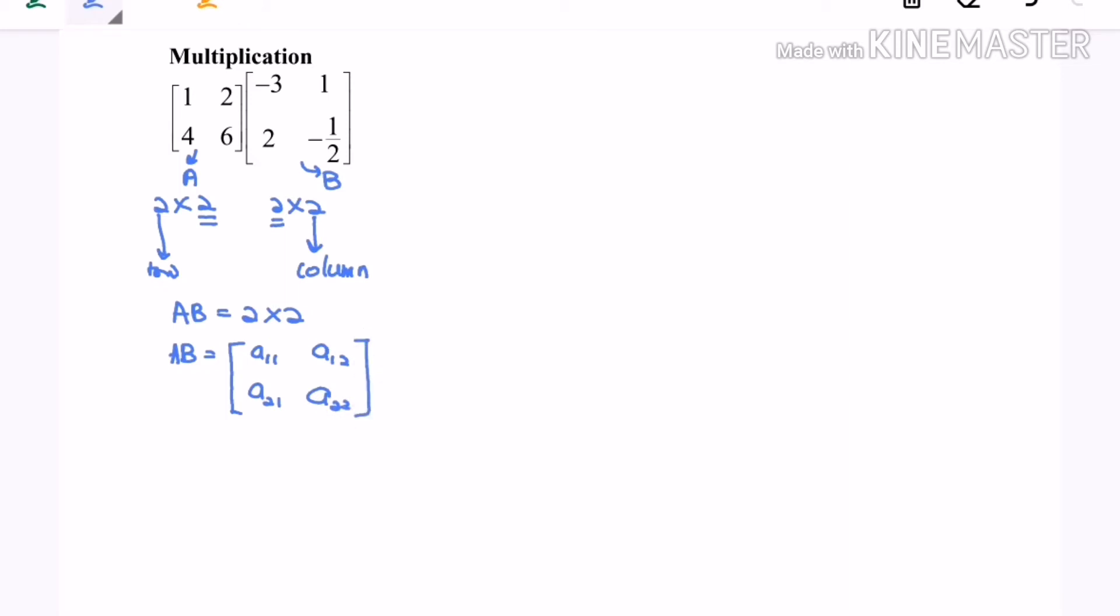Okay, so now we have to understand what does it mean by A11. A11 means the first row multiplied with the first column for matrix B.